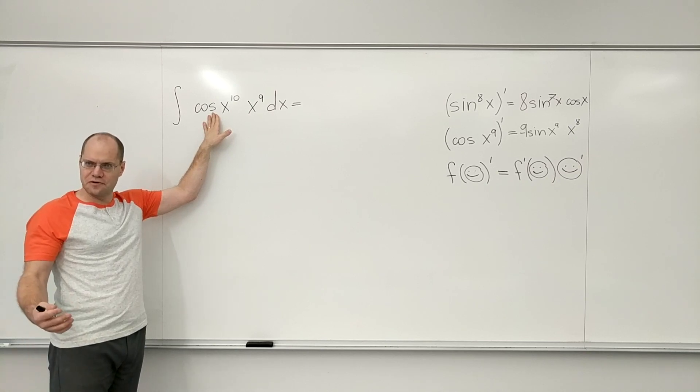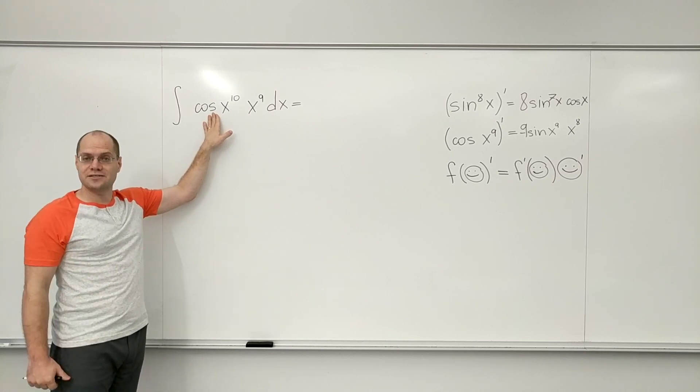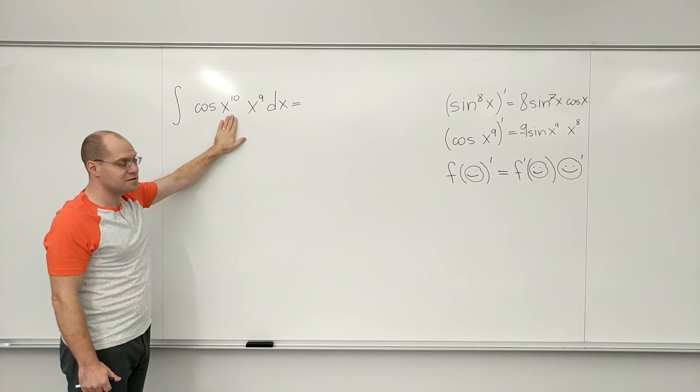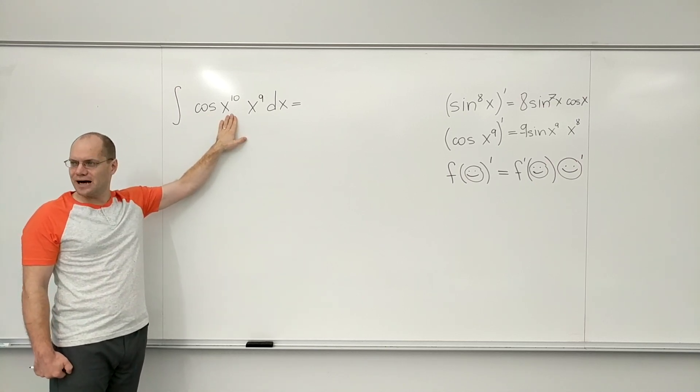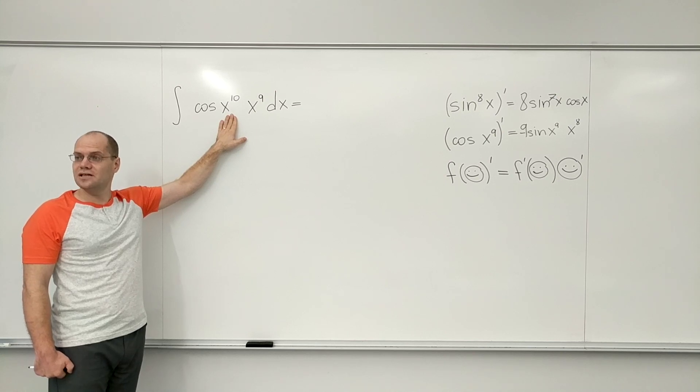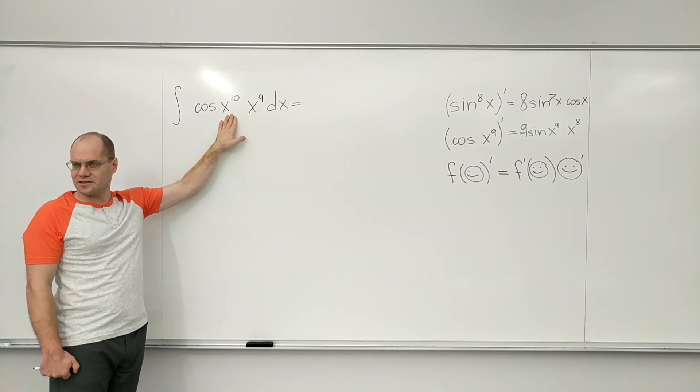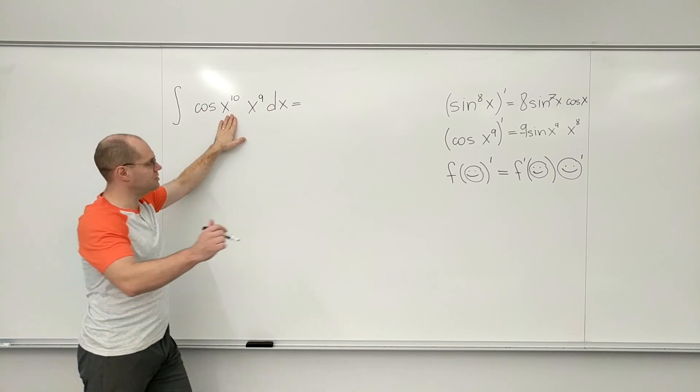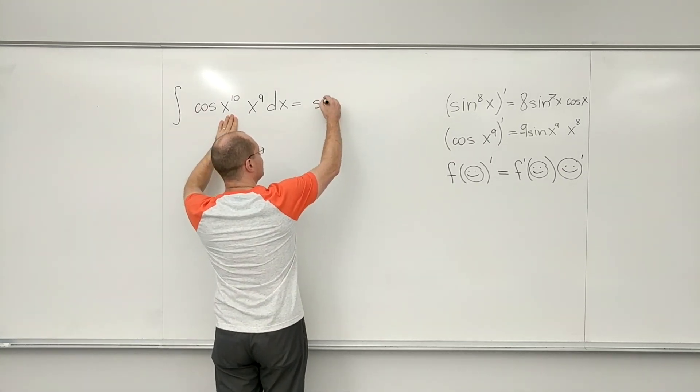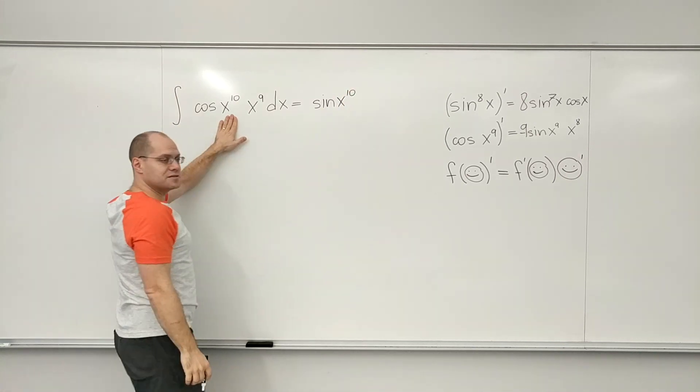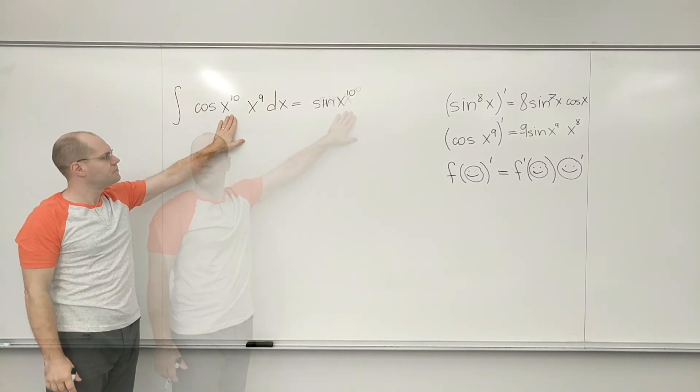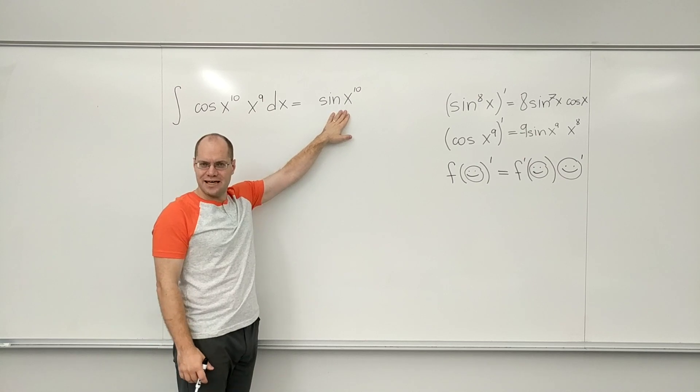So it will be the derivative of sine. Sine of what? Well, your only option is the derivative of sine of x to the tenth power. It can only be sine of x to the tenth power. So let's write it down. Our very intelligent guess is that it is sine of x to the tenth power because it's the only thing it can be.